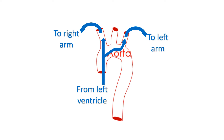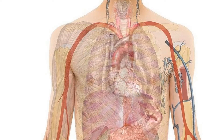The left ventricle is the lower muscular chamber of the heart which pumps blood to the whole body. When there is a significant difference in blood pressure between the arms, this explanation alone is not enough.